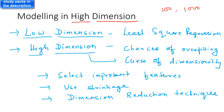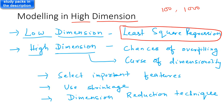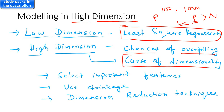In low dimensions, the least squares regression model works fine, but in high dimensions when p is quite high, least squares regression will most likely overfit. The chances of overfitting are quite high when fitting least squares regression on high-dimensional data. Sometimes p, the number of predictor variables, is even higher than the number of observations in your data. This is known as the curse of dimensionality.